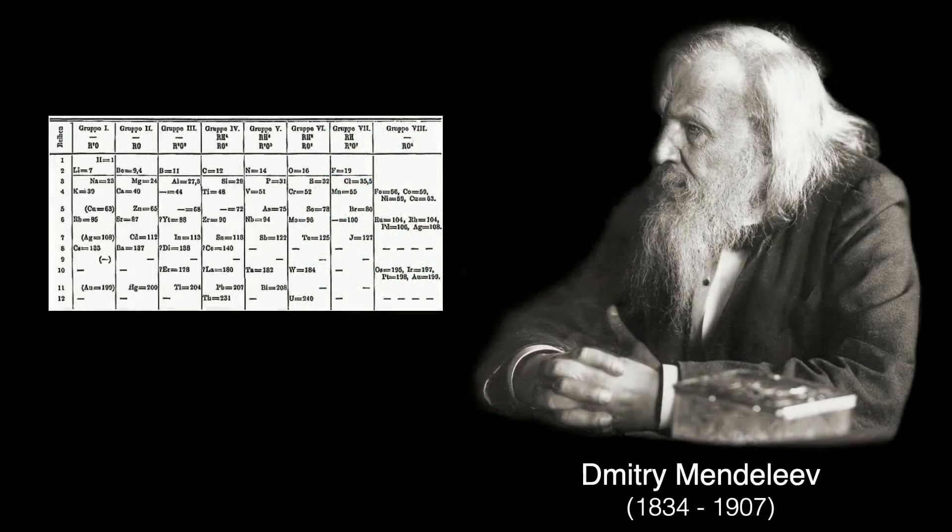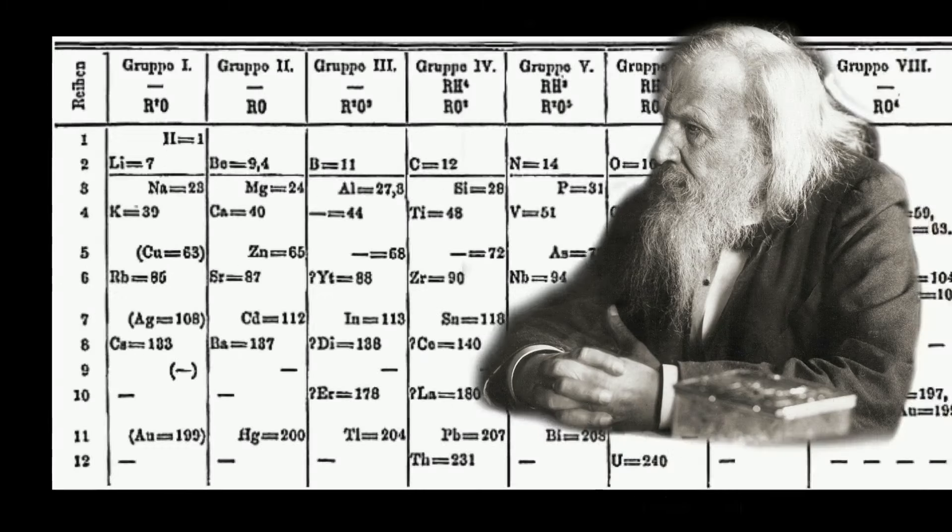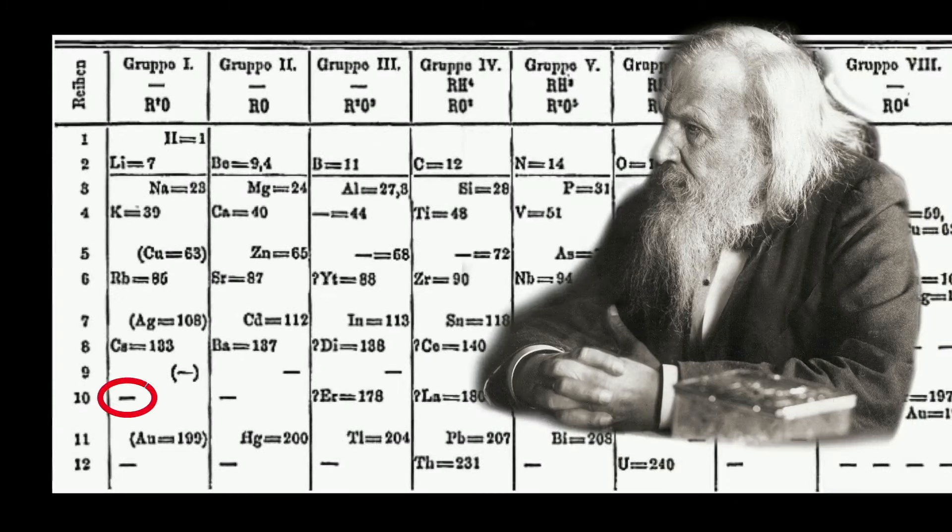Dmitry Mendeleev published his famous Periodic Table in 1869. He was aware there may have been elements as yet undiscovered. He left spaces for them in his table, seen here as dashes. Here, just under cesium, he left a blank space reserved for this month's element, francium.